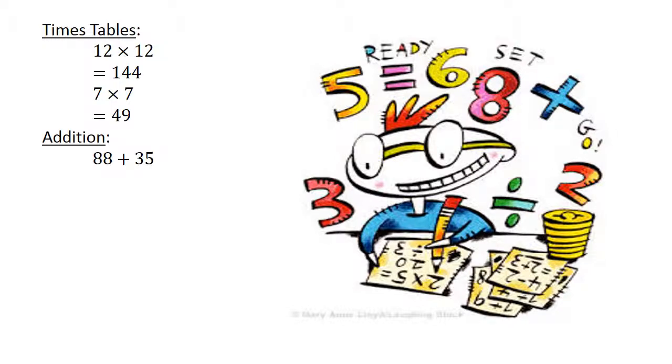Addition. 88 plus 35 equals 123. Subtraction. 12 minus 29 equals negative 17.